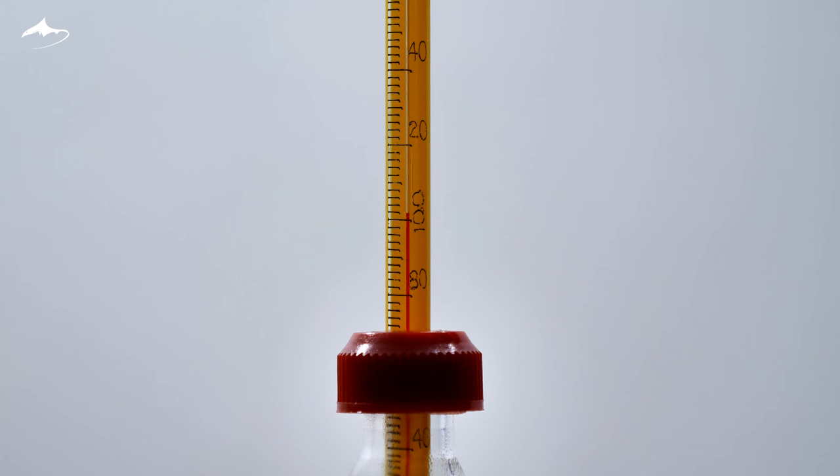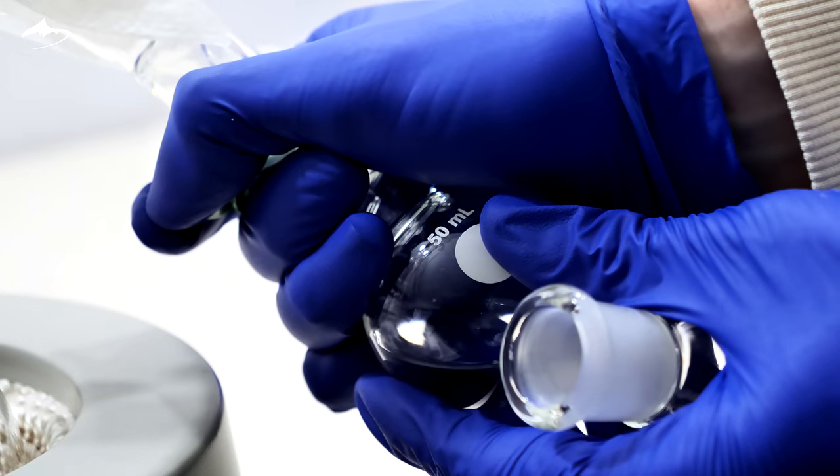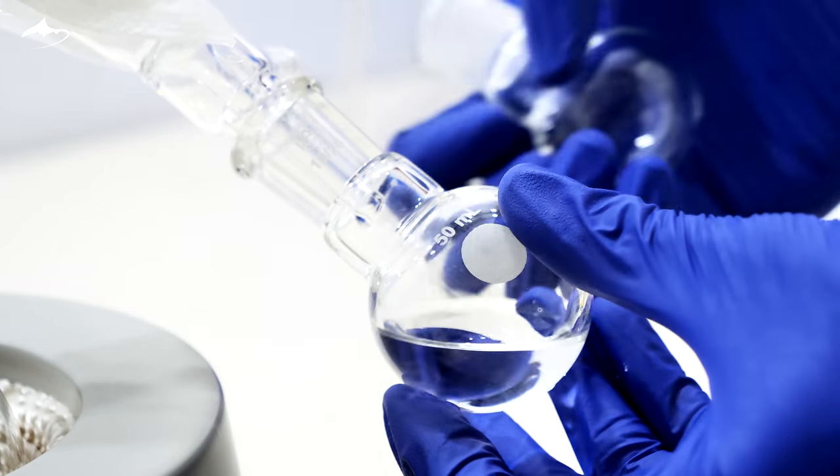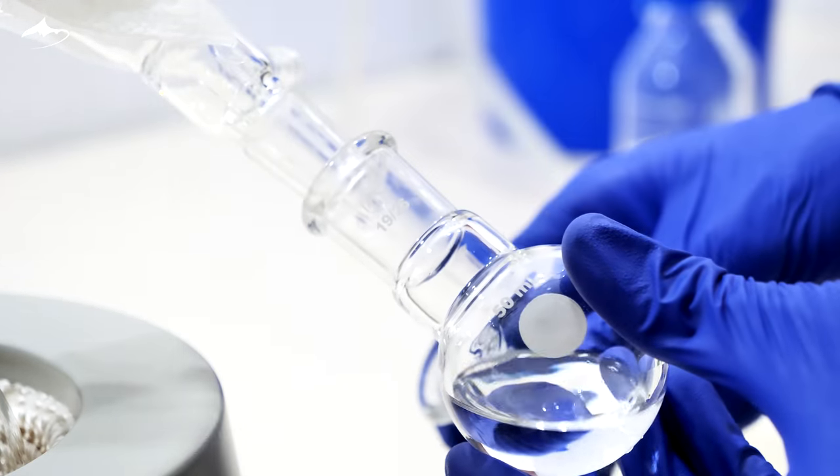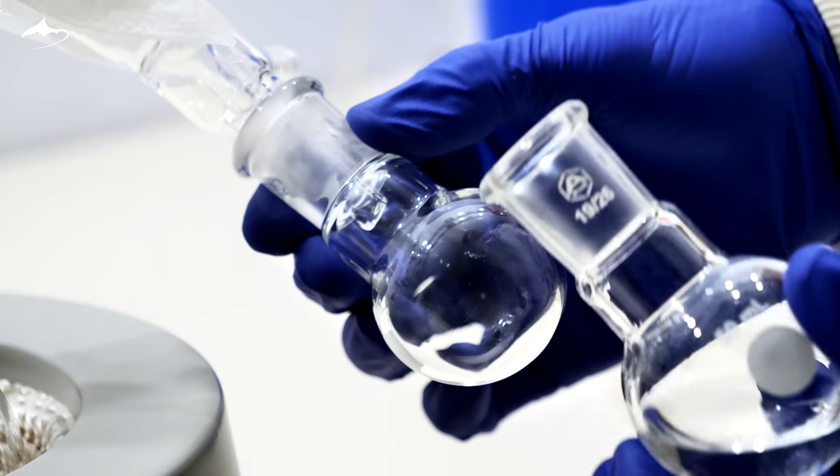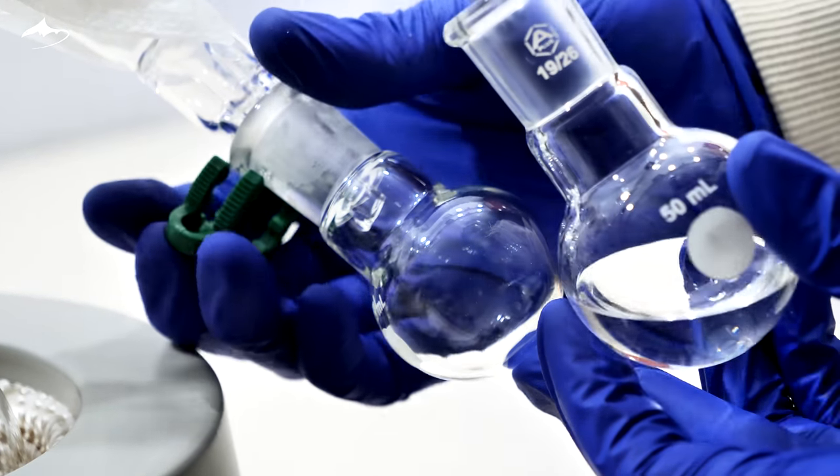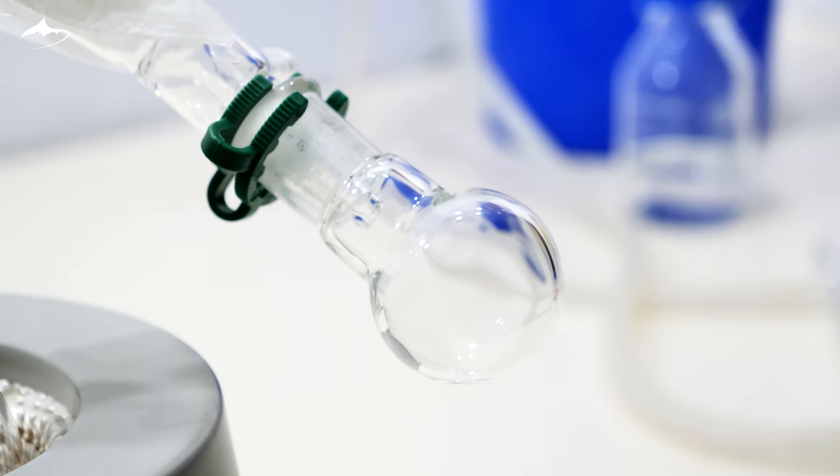After some time, the temperature surpasses 100 degrees Celsius, so the collecting flask is changed to collect a new fraction of distillate. It is collected until a few milliliters of liquid remain in the boiling flask. The temperature reaches 145 degrees Celsius, which is still below the boiling point of butyric acid.